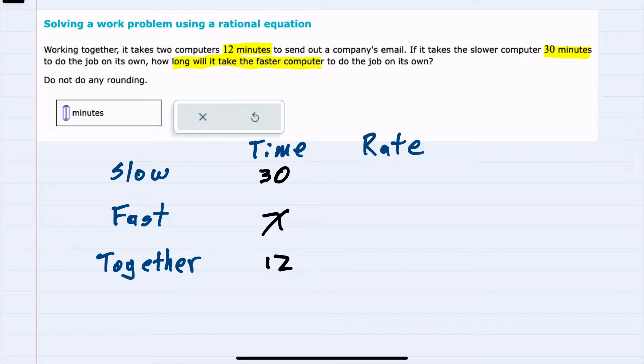So for example, the slow computer can send one batch of emails in 30 minutes. So its rate is one email per 30 minutes.